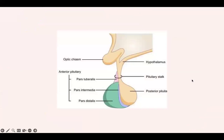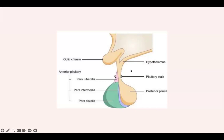Before we proceed, let's orient ourselves to the pituitary. The pituitary is a gland that has two lobes: the anterior lobe, also called the adenohypophysis, and the posterior lobe, also called the neurohypophysis. The anterior pituitary is further divided into three parts: the pars tuberalis, the pars intermedia, and the pars distalis. We're mainly concerned with the pars distalis for this lecture.